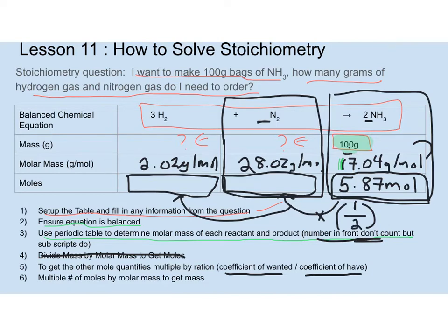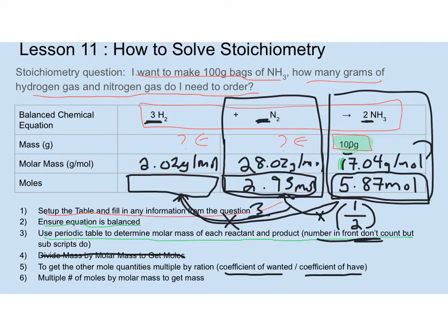So multiplying 5.87 by 1/2 gives 2.93 moles of nitrogen. And to get the moles of hydrogen, I multiply 5.87 by 3/2 — because the coefficient of H2 is 3 and the coefficient of NH3 is 2 — which gives 8.81 moles of hydrogen.